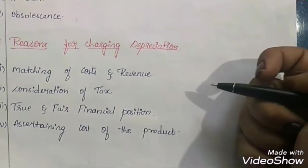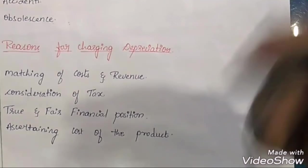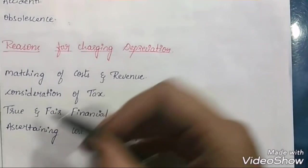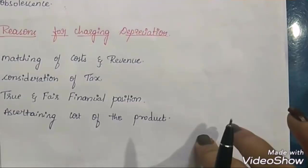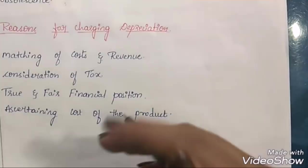If we do not charge depreciation in the books of accounts, the value of fixed assets will be overvalued and it may show a false financial position of the business. Another reason is ascertaining the cost of the product — if we want to know the exact value of the product on a particular date, it can be known only after charging the depreciation. These are the reasons why we need to charge depreciation.